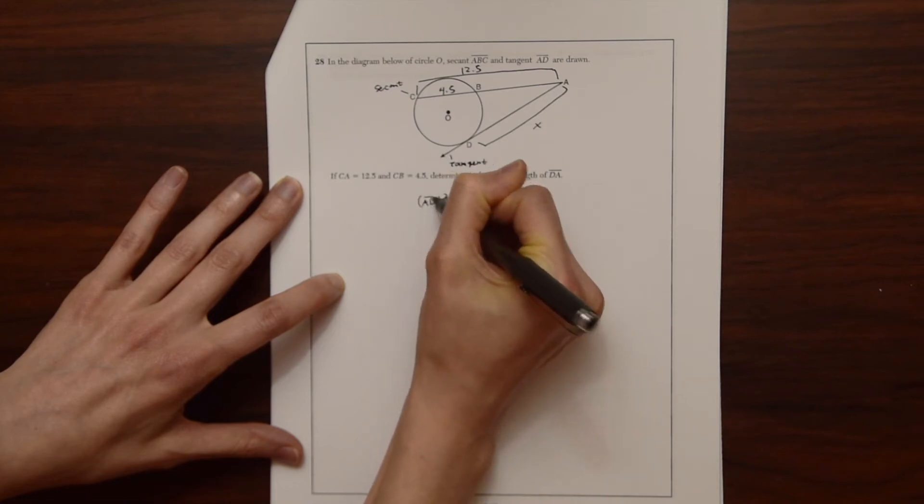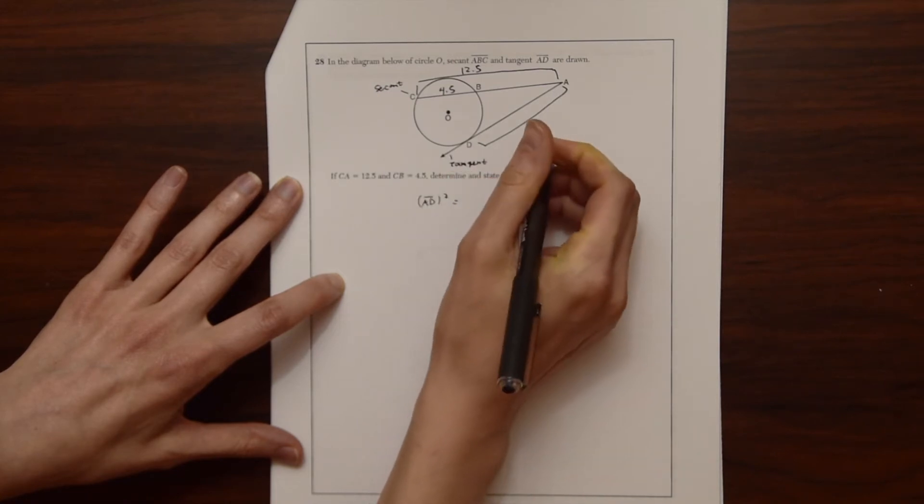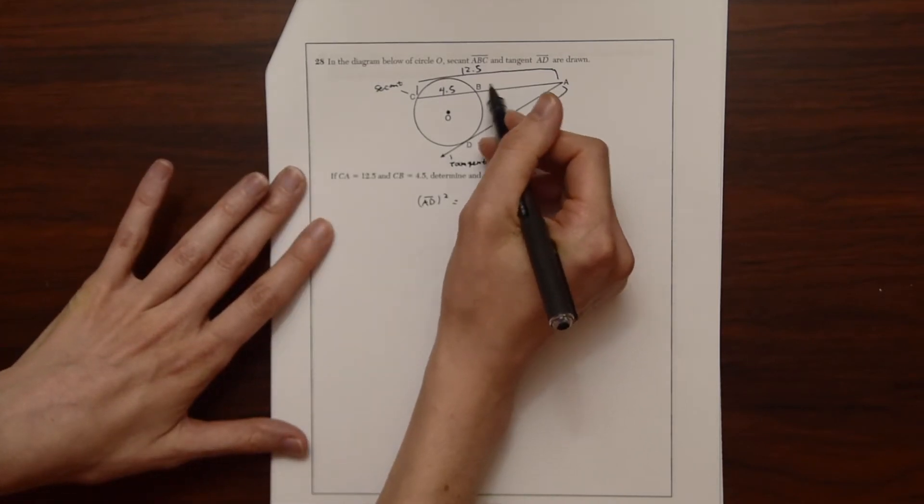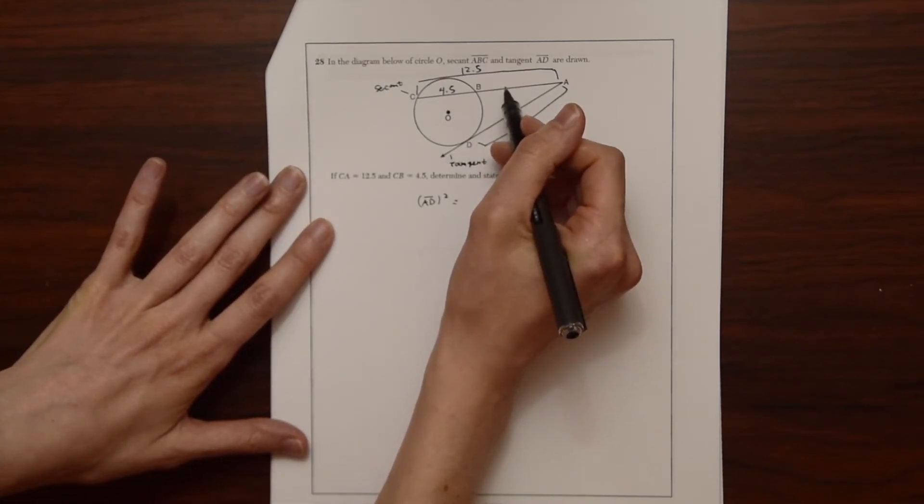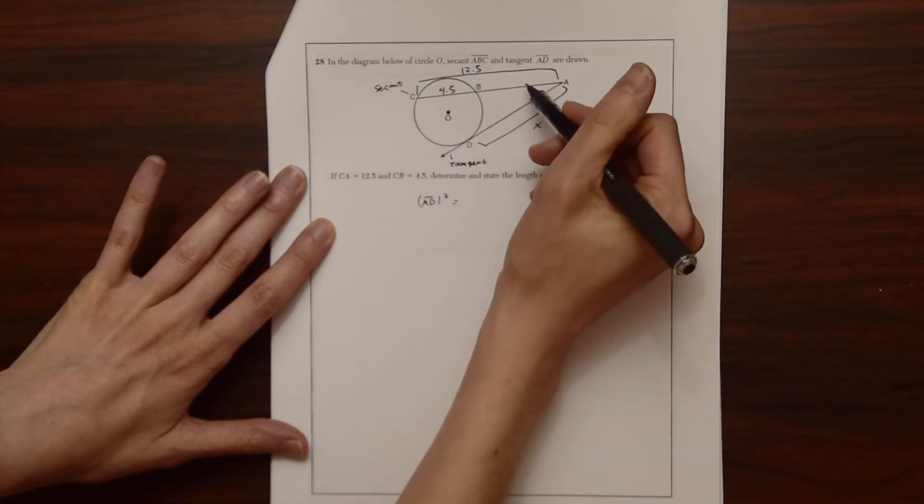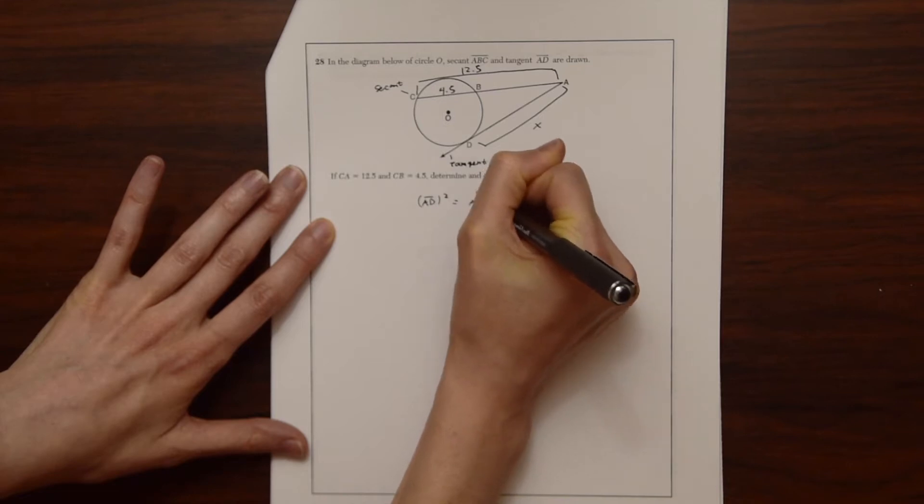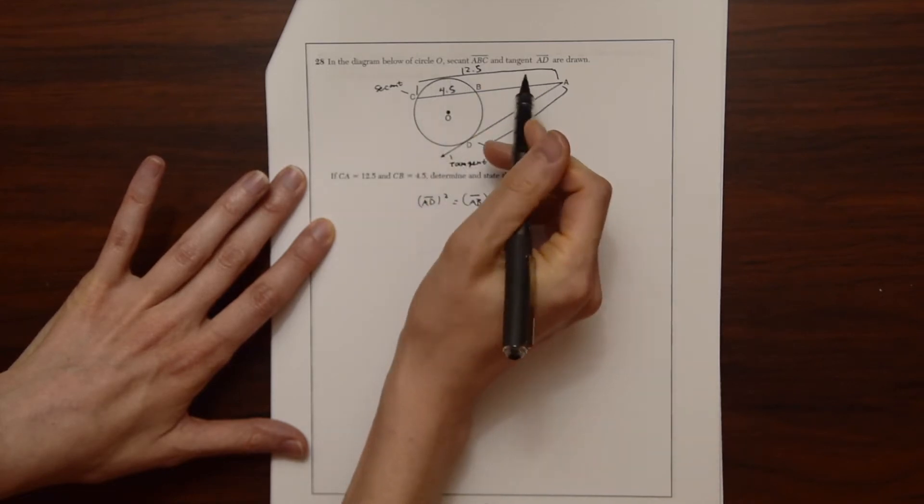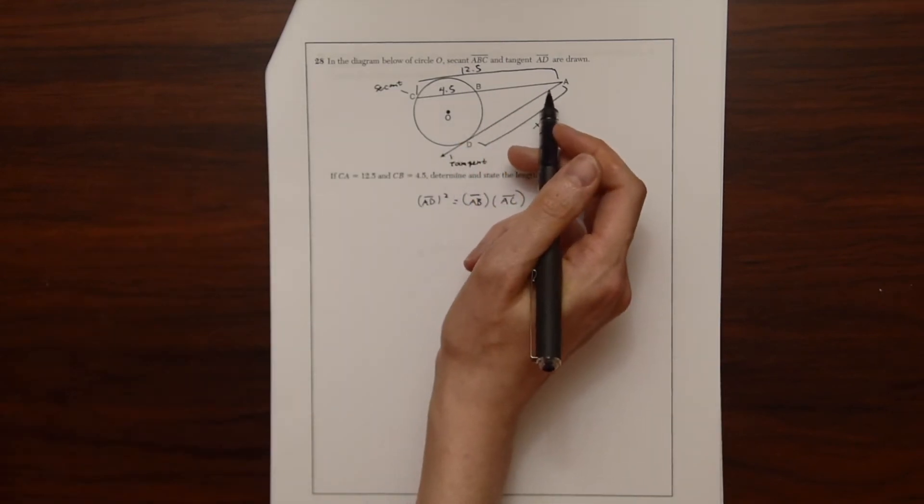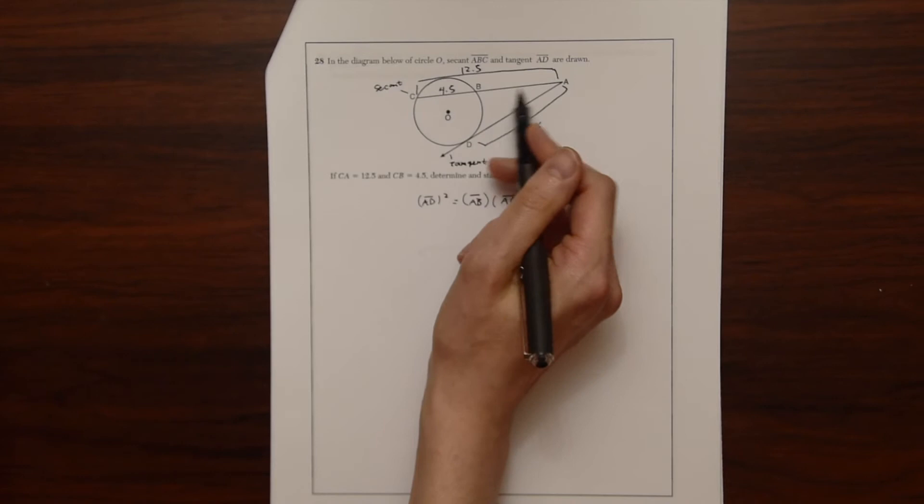is going to be equal to the secant length, like the first part times the secant length of the entire part. So the first part would be AB, and then times the whole part, which is AC. So we just have to figure out what AB is here.